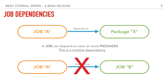To talk about job dependencies: a job can depend on zero or more packages, but a job can never depend on another job. As of now in the BOSH domain, a job cannot depend on another job — only a job can depend on zero or more packages. We call this dependency a runtime dependency, meaning the package will only be available for that job at runtime, and you can specify which packages need to be available.